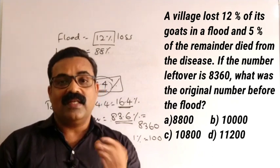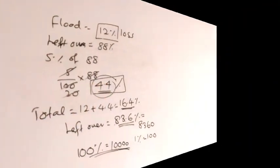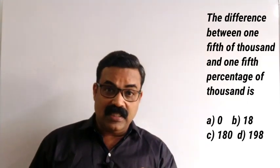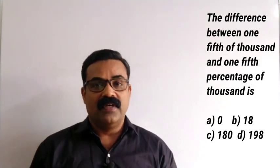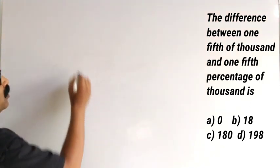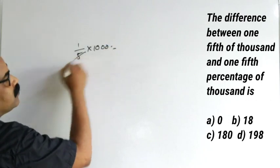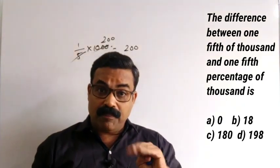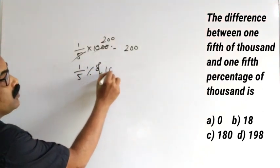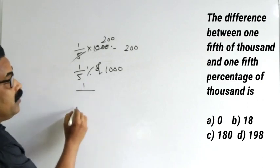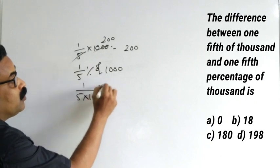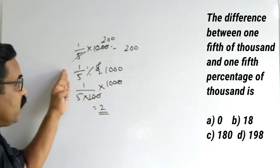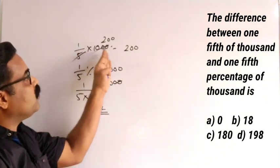Kindly note the next question. Find the difference between one-fifth of 1000 and one-fifth percentage of 1000. We have two things to find. One-fifth of 1000 equals 200. And one-fifth percentage of 1000 — that is 1 by 5 into 1 by 100 into 1000 — equals 2.